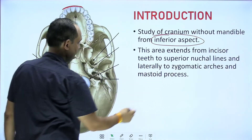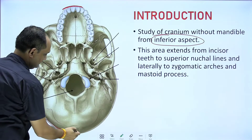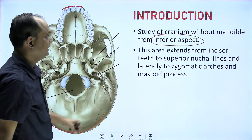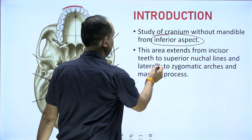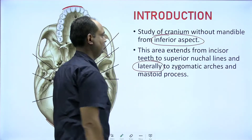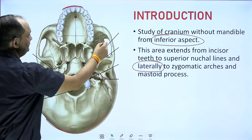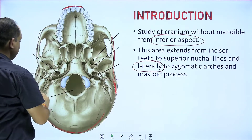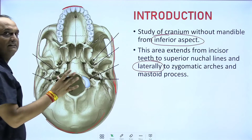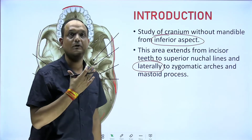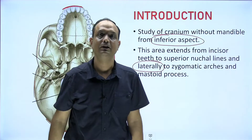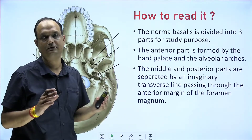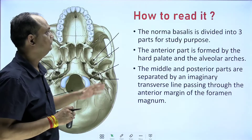Norma basalis extends from the incisor teeth up to the superior nuchal lines. This whole area is known as norma basalis. Laterally, it extends up to the zygomatic arch and the mastoid process. So this area of the exterior of the skull, which you are seeing from the inferior aspect, is known as norma basalis.